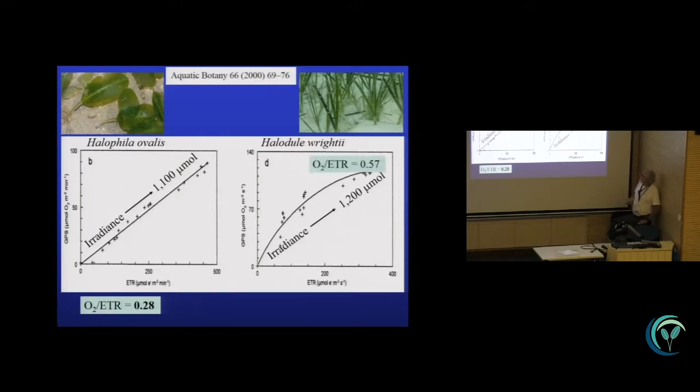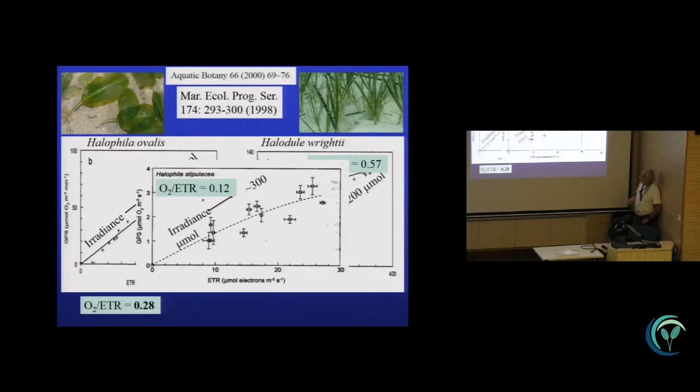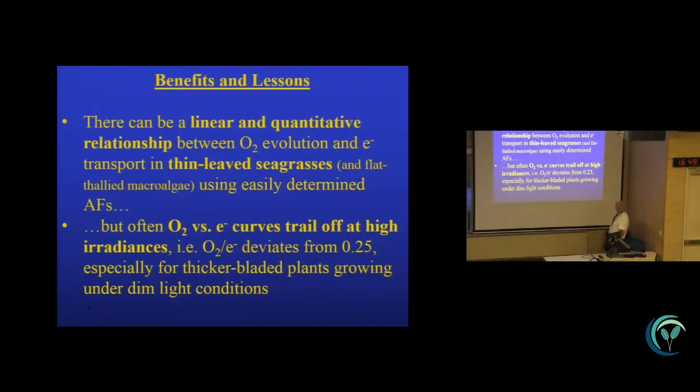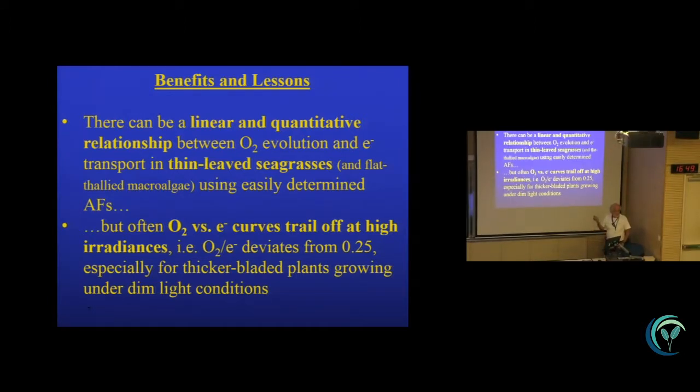Now, that's not true for all seagrasses, and we have many exceptions. Halophila stipulacea has a very low oxygen-to-ETR value if you do this. Other plants like Halophila wrightii have much higher values. The lesson we can learn from this is that there can be a linear and quantitative correlation between photosynthetic oxygen evolution and electron transport measured this way. But that's not always true, and very often it can be higher or lower than the 0.25 molar ratio expected. Also, very often, these curves taper off at high light intensities because of photorespiration or other things that electrons will reduce except CO2.